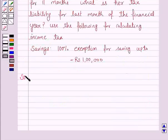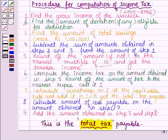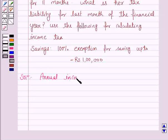Let us now move on to the solution. The first step for calculating income tax is to find the gross income of the assessee. The annual income is Rs 3,85,000.